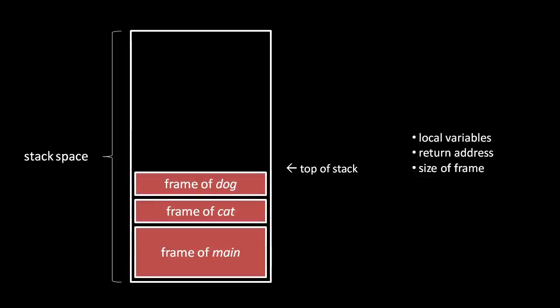Likewise, if cat calls another function, dog, then dog's local variables, the size of its frame, and the return address to cat are stored in another frame on top. As we add frames, we keep track of the top of the stack with a register called the stack pointer. When a function returns, the frame size is used to adjust the stack pointer back down to the last frame and execution jumps back to the return address. We don't have to actually delete frames because the space they occupy gets overwritten by subsequent frames as needed. Also, the first frame is special — the program ends when the first function returns, so it needn't store a size or return address.